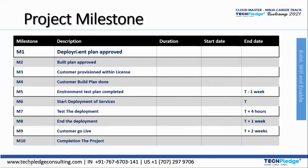Our project is divided into 10 milestones. M1 is where the deployment plan is approved. M2 is where the build plan is approved. M3 consists of customer provisioning with license. Then the customer build plan is done and your environment test plan is completed. Then you start deployment of your service, considering the time required — maybe one week or four hours — and the time needed for testing.